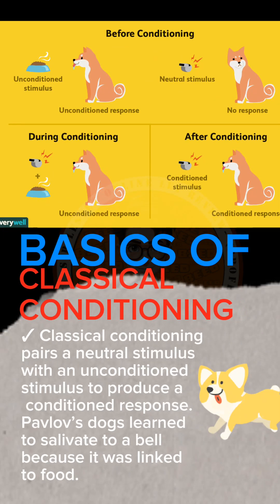Basics of classical conditioning. Classical conditioning pairs a neutral stimulus with an unconditioned stimulus to produce a conditioned response. Pavlov's dogs learned to salivate to a bell because it was linked to food.